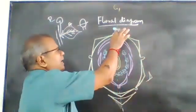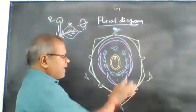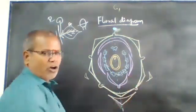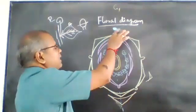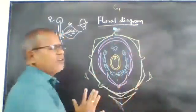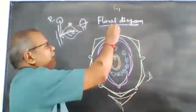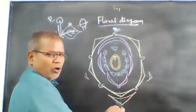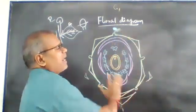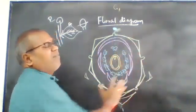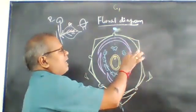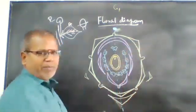On the posterior side, the mother axis is drawn. On the anterior side, the bract is drawn. On the lateral side, the bracteoles are drawn. And in between the mother axis, bract, and bracteoles, the floral leaves are drawn. The order is: first calyx, then corolla, then androecium, then gynoecium.